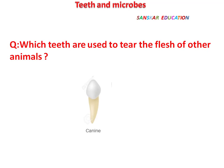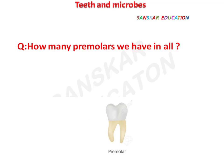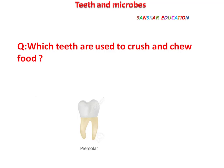Which teeth are used to tear the flesh of other animals? Answer: canines. How many premolars do we have in all? Answer: eight premolars. Which teeth are used to crush and chew the food? Answer: premolars.